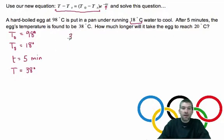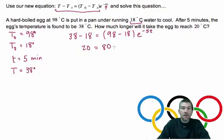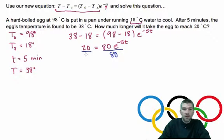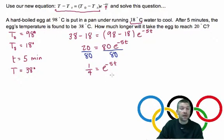So, 38 minus 18, and I'm just substituting into Newton's law that's written right there at the top of the page. The initial temperature, 98, minus the surrounding temperature, 18, times E to the negative 5K. Okay. So, 38 minus 18 is 20. 98 minus 18 is 80. Divide both sides by 80 because what we're going to try and do is get that E all alone. So, we're going to end up here with one-fourth equals E to the negative 5K. We're going to take the natural log of both sides. Natural log allows us to get rid of the E. Natural log of E is whatever the exponent is. In this case, it's 5K.